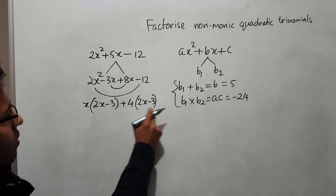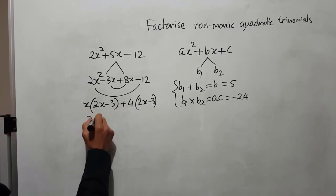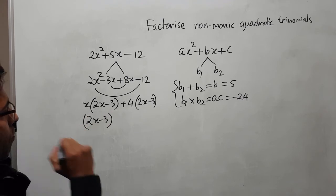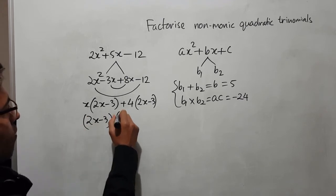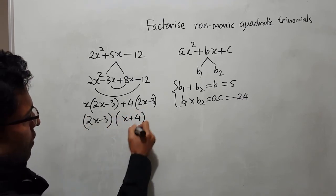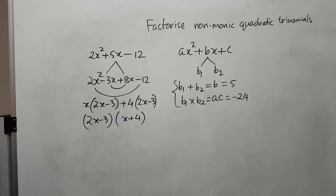So here, the common factor 2x minus 3 appears in both groups, and we have x plus 4 left. So the factorized answer is (2x minus 3)(x plus 4).